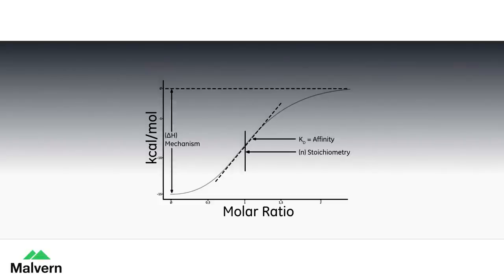The enthalpy, delta H, is also derived directly from the isotherm and is the amount of heat released per mole of ligand bound.